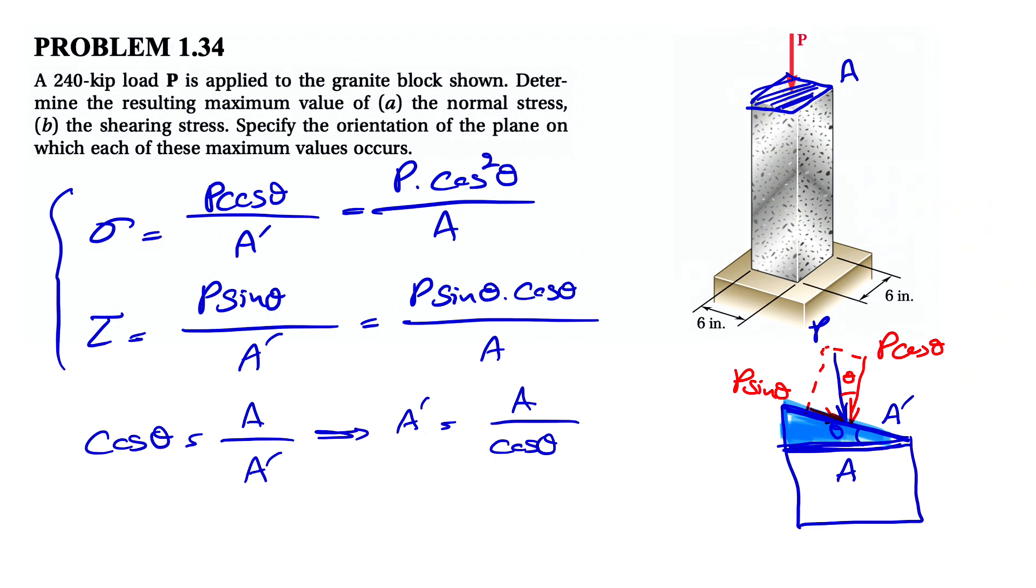But what the question is asking is when we're going to have the maximum value of these, or at which angle we have the maximum value for each of these two. So what we're going to do is take the derivative of normal stress over theta and put that equal to zero to find theta, and do the same for shearing stress.